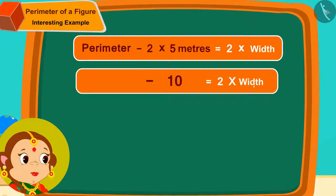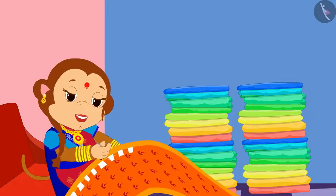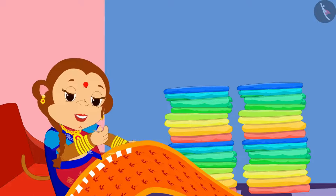If I subtract 10 from 14, I will get 4 meters. Oh, wow! The width of the sheet is half of 4 meters. That is 2 meters.